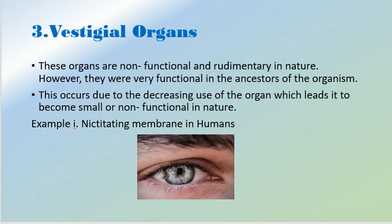The third category of anatomical and morphological evidences is vestigial organs. Vestigial organs are non-functional and rudimentary in nature. However, they were very functional in the ancestors of the organisms. This occurs due to the decreasing use of organs, which causes them to become small or non-functional. A remnant of that organ is still present.